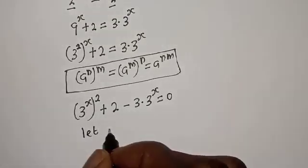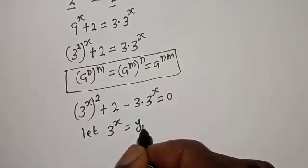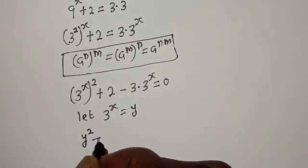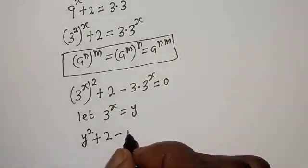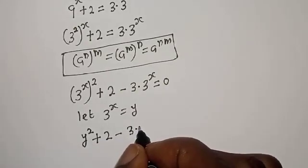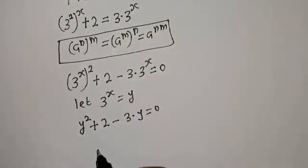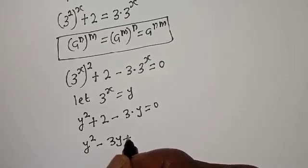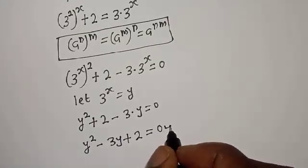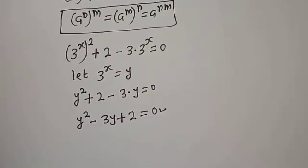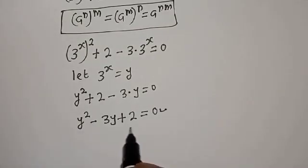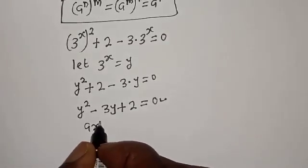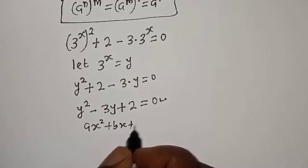Now let 3 raised to power s equal y. Substituting, we have y squared plus 2 minus 3 multiplied by y is equal to 0, which gives us y squared minus 3y plus 2 is equal to 0. This is a quadratic equation which can be solved using the quadratic formula.